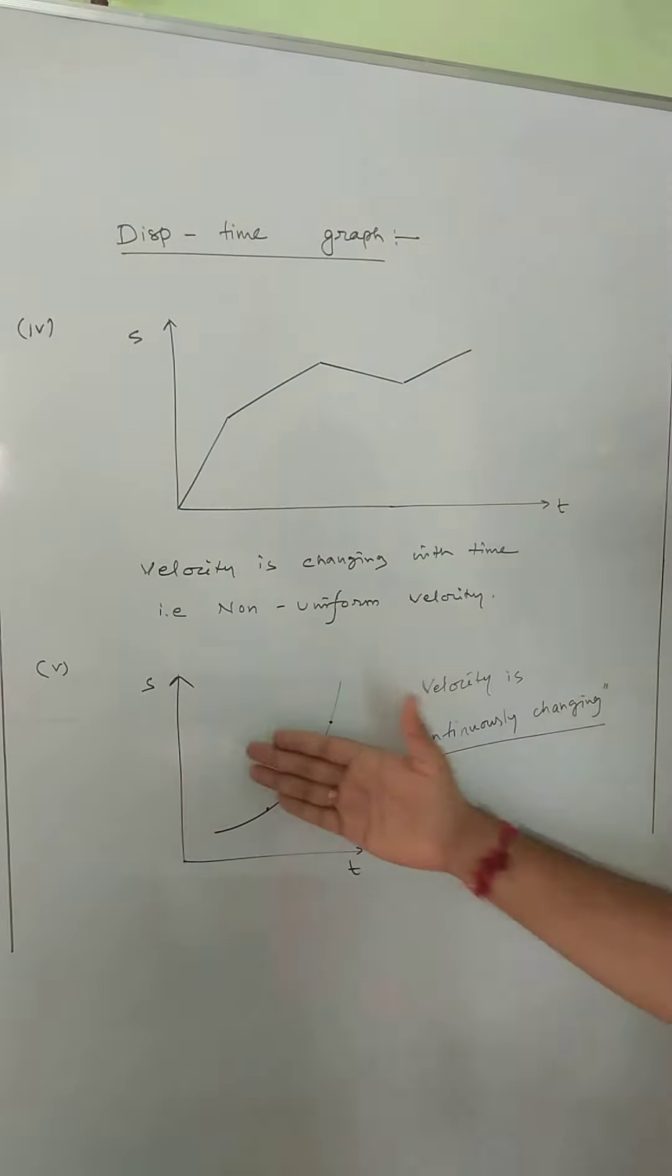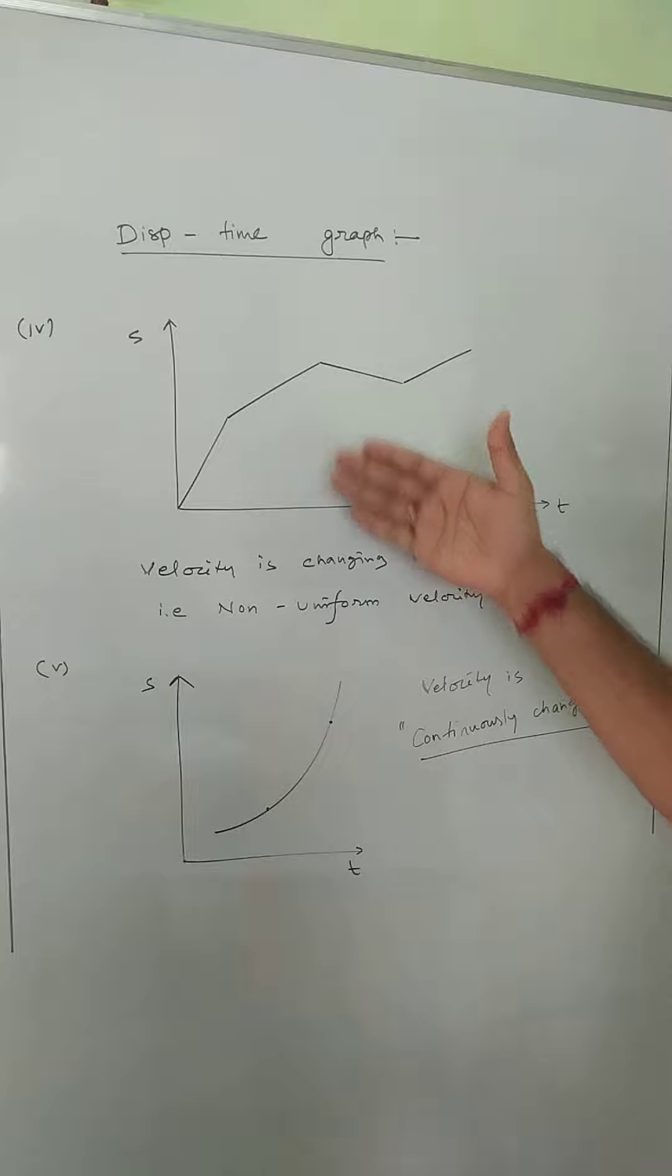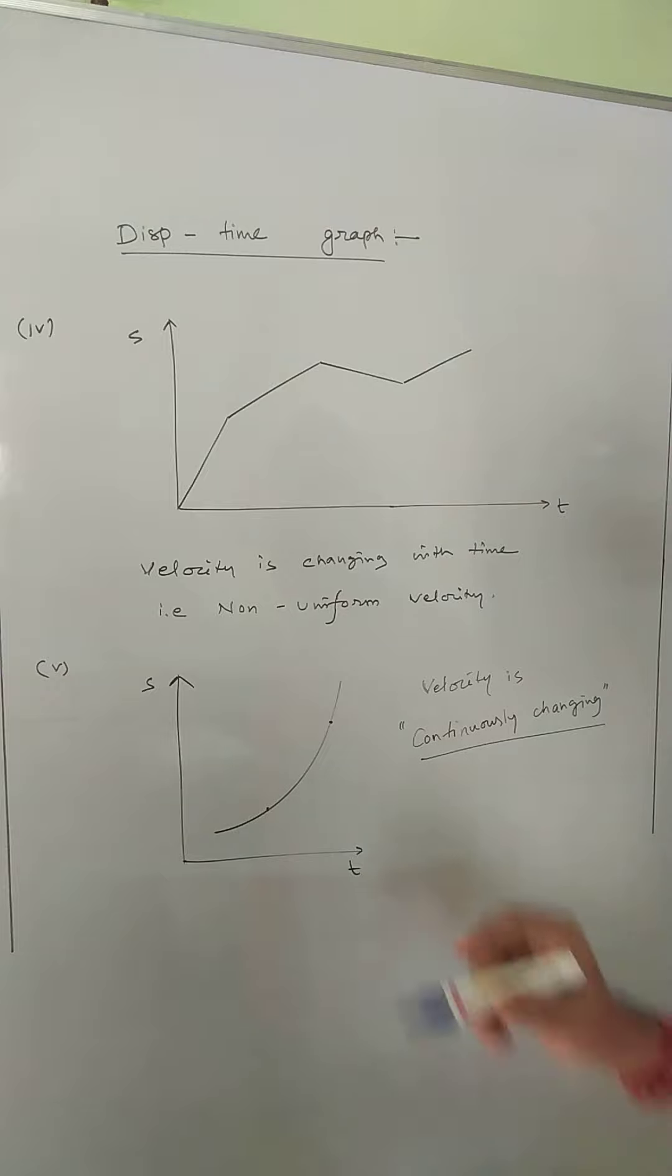Now in this fifth case, if the displacement-time graph is a continuous curve like this, then the velocity is continuously changing. This is also changing but discrete changing, but this is continuous changing. In this type of case, if you want to find out the average velocity, what we have to do...